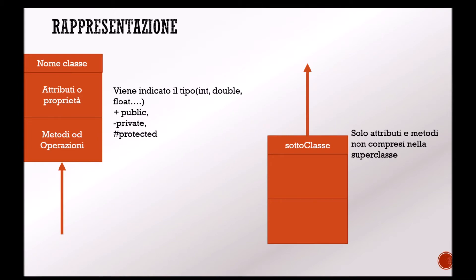To graphically represent a class, you can use any diagramming software. I will show you an example using the software DIA, which is free and can be downloaded from the internet. But first let's look at some theory. How is a class represented? We have already seen it before — it is a rectangle divided into three parts, where at the top there is the name of the class, followed by the attributes or properties, and the methods.